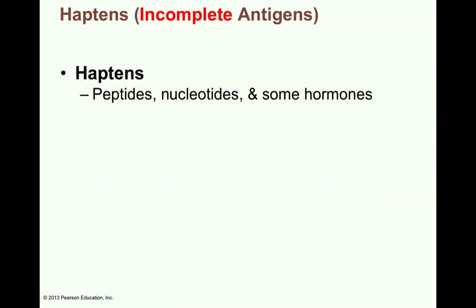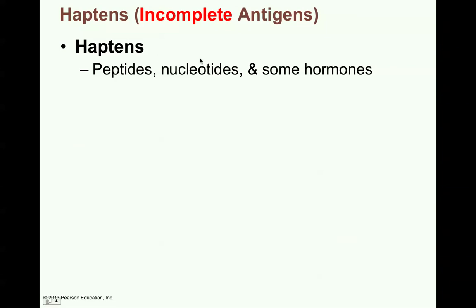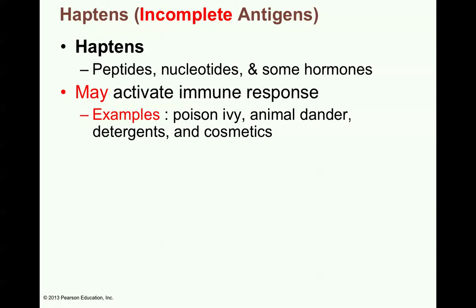There's also something known as a hapten — an incomplete antigen. Haptens would be peptides — little small fragments of amino acids — nucleotides, and some hormones. These little bitty molecules are considered incomplete antigens. They may activate the immune response, and examples are the toxin produced by poison ivy, animal dander, detergents, and cosmetics. Not everyone has a sensitivity to these, but a reaction to them is considered an allergic response. Most people, by the way, are highly allergic to the chemicals released by poison ivy.